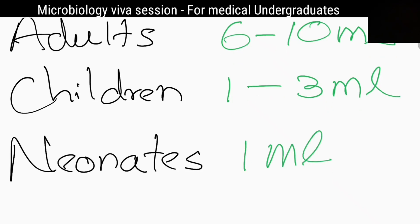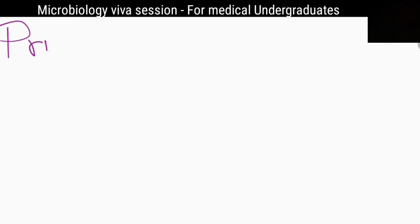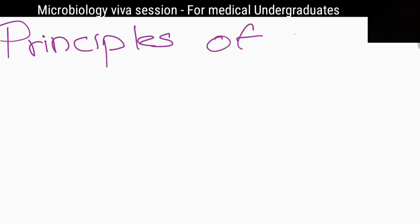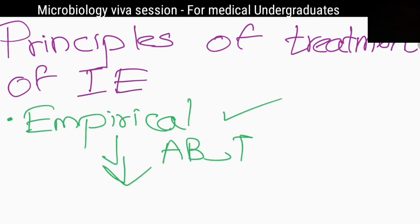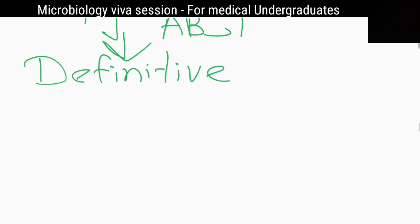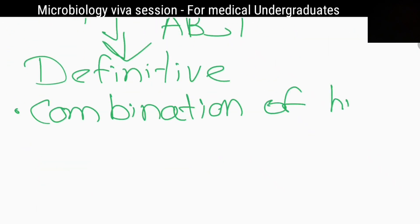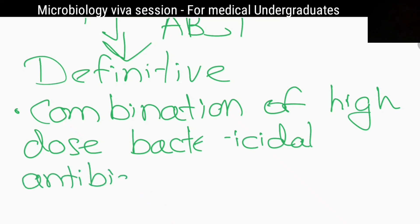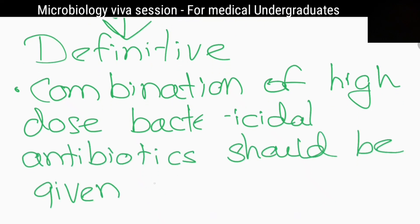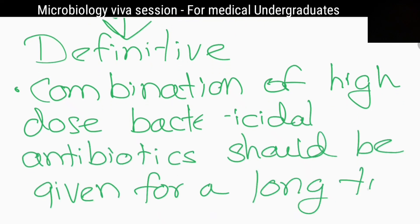What are the principles of treatment of infective endocarditis? Empirical treatment should be guided by antibiotic sensitivity testing. A combination of high-dose bactericidal antibiotics should be given for a long duration.